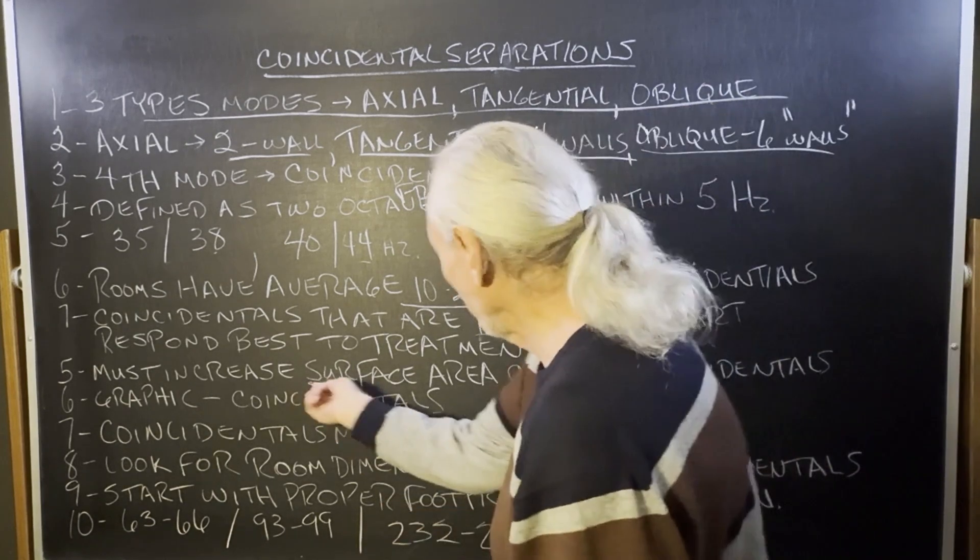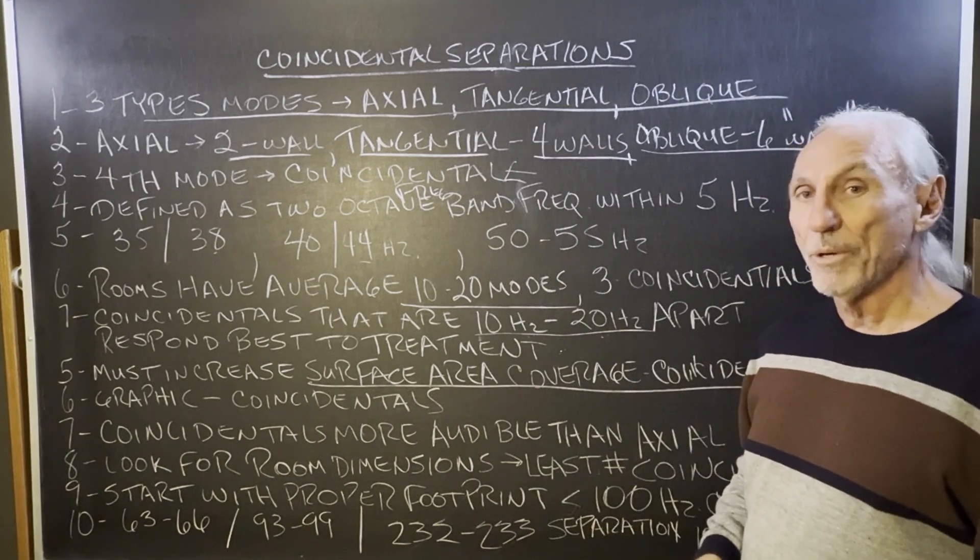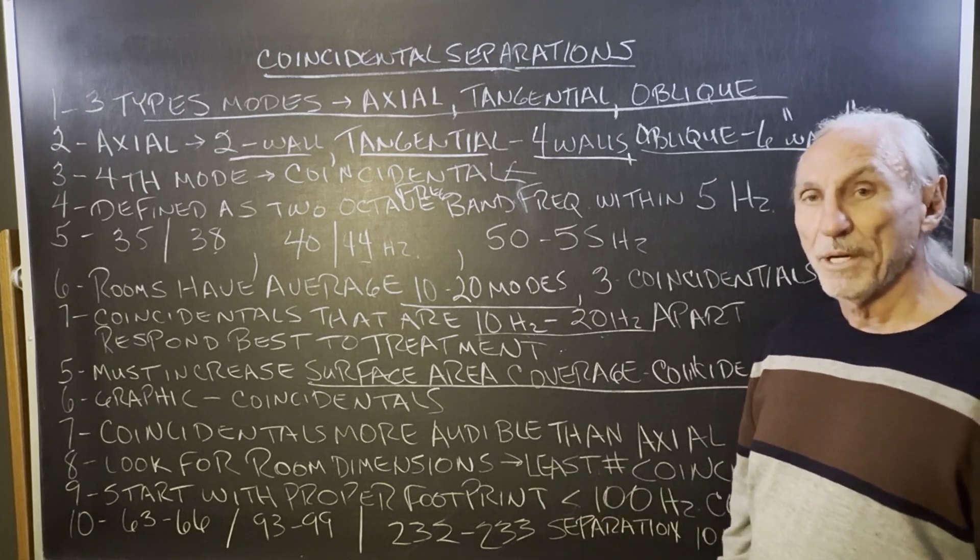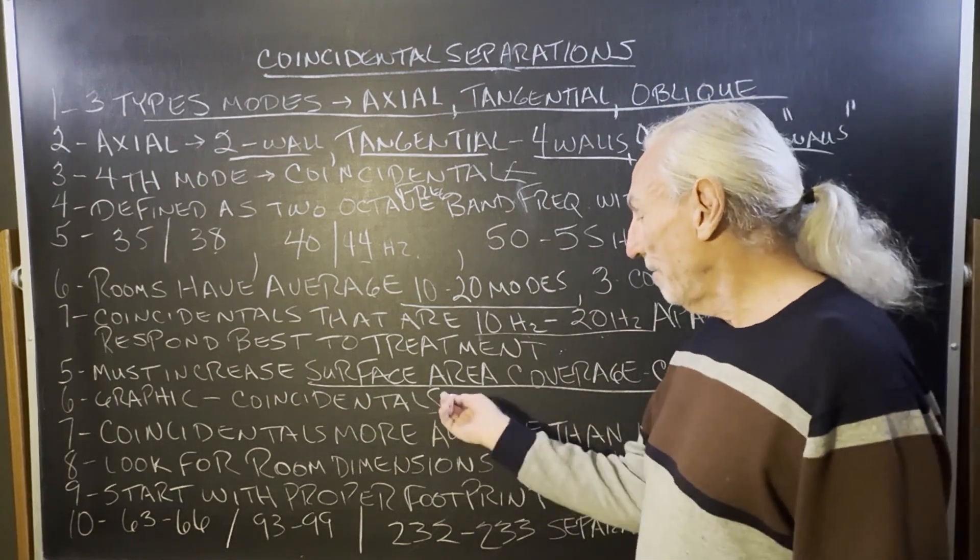We must increase the surface area of coverage for coincidentals. If we have four or five coincidentals on one wall, two walls, we're going to have to increase the surface area coverage at that frequency range. So that's what's critical. Let's look at the graphic here.